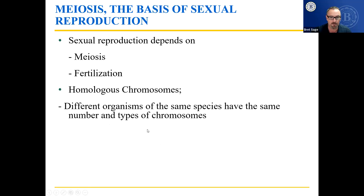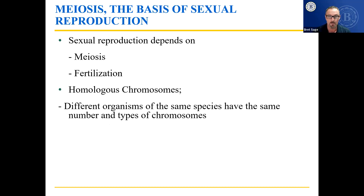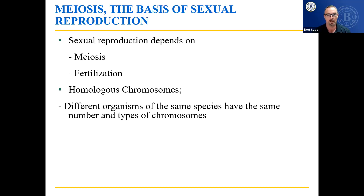Different organisms of the same species have the same number and type of chromosomes. For example, all humans on this planet, while being different on the outside, have the same number of chromosomes — barring something like trisomy 21, which we call Down syndrome, which is unique to those individuals. What we're saying is that 99% of all humans on this planet have the same number and type of chromosomes, but the genes written there may be slightly different.